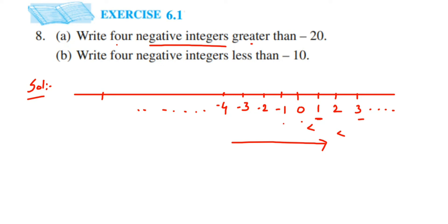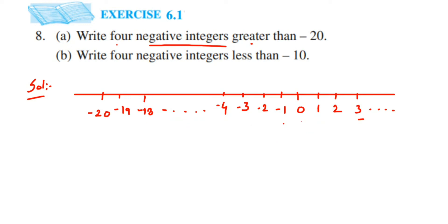Now, they are asking us to write down four negative integers greater than minus 20. Suppose I have minus 20 here — whatever numbers come to the right of minus 20, we pick any four negative integers from there. On the right-hand side of minus 20 we get minus 19, minus 18, and so on. So the answer for part one can be: minus 4, minus 3, minus 2, minus 1 — since they are negative integers greater than minus 20 — or minus 19, minus 18, minus 17, minus 16, or minus 11, minus 10, minus 9, and so on.